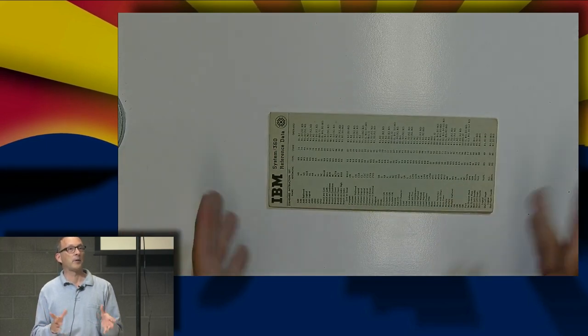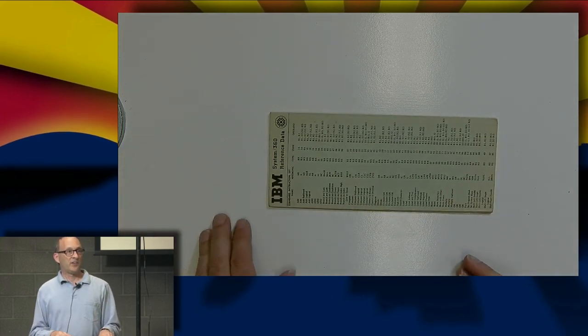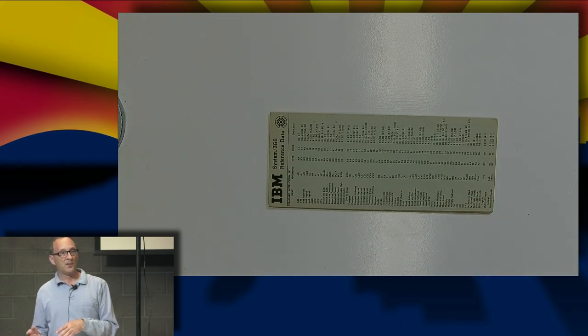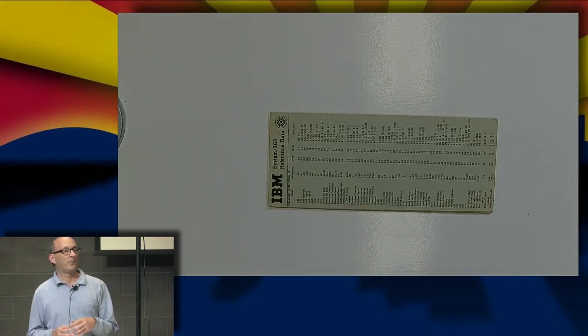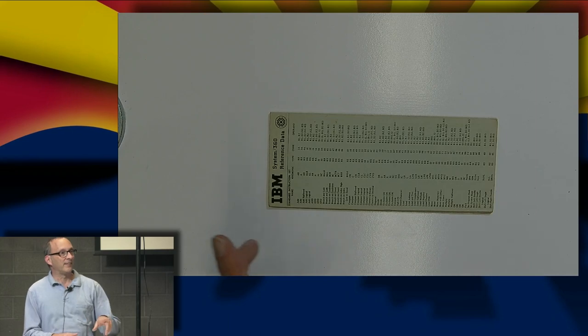Why is the Hollerith card the same size as old dollar bills? Mr. Watson with IBM, when he was starting his tabulating and computing business, needed a place to store all these cards. He didn't know what size card to make. Walking outside the Mint one day, they were throwing away old file cabinets for dollar bills. He said, 'Can I have those?' They said 'Sure, they're scrap.' That's how we got the size of a computer card.